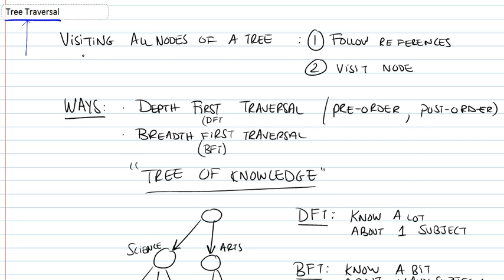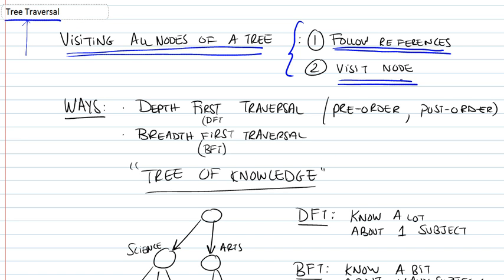What it basically consists of is visiting all the nodes of a given tree. It's defined with two essential steps: following references and visiting nodes. By visiting nodes, we mean performing a certain operation once we land on a particular node.